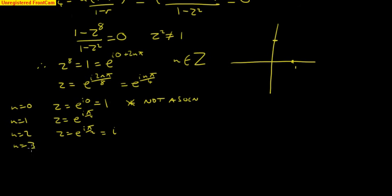n equals 3. z equals e to the i 3 pi by 4, which is minus 1. This also, because if you square it, you do get 1. So this also is not a solution.